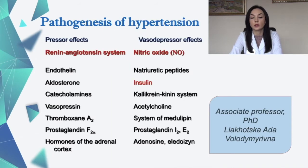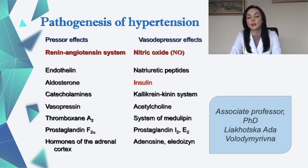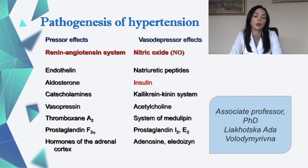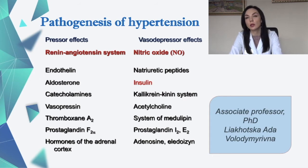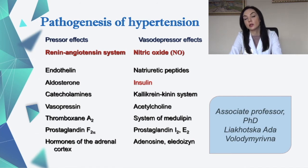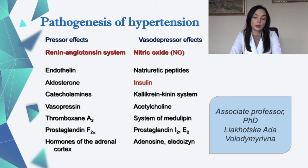In the pathogenesis of hypertension, we have pressor effects and vasodepressor effects. Pressor effects include the renin-angiotensin system, endothelin, aldosterone, catecholamines, vasopressin, thromboxane A2, prostaglandins, and hormones of the adrenal cortex. Vasodepressor effects include nitric oxide, natriuretic peptides, insulin, kallikrein-kinin system, acetylcholine, medullipin system, prostaglandins I and E, adenosine, and adrenomedullin.